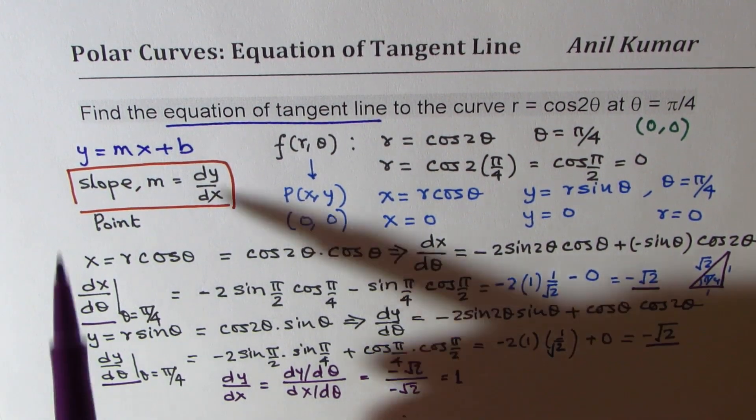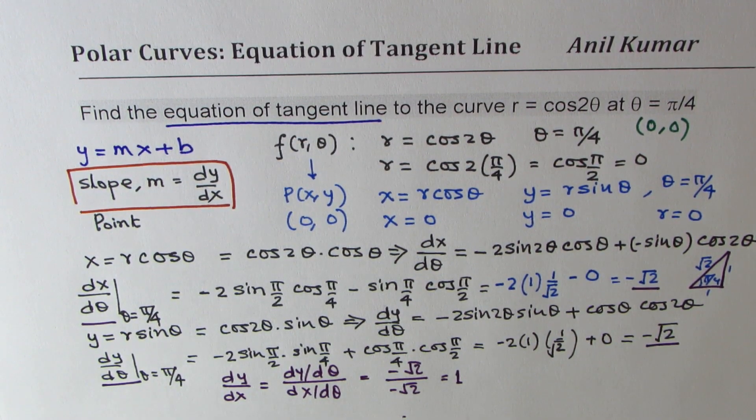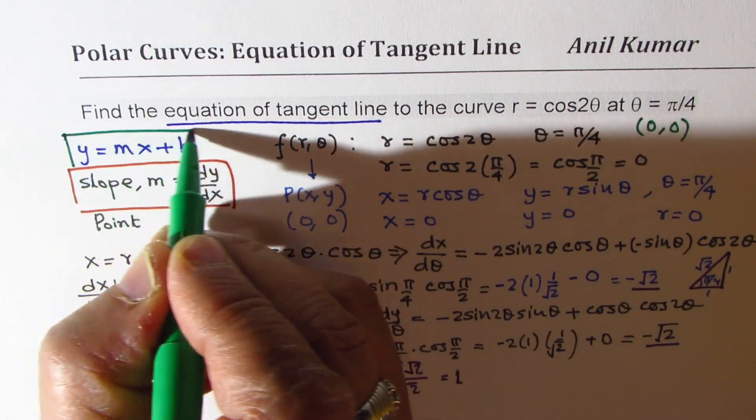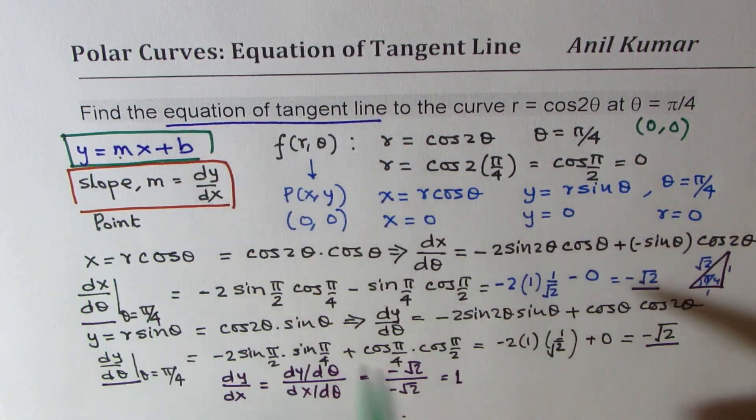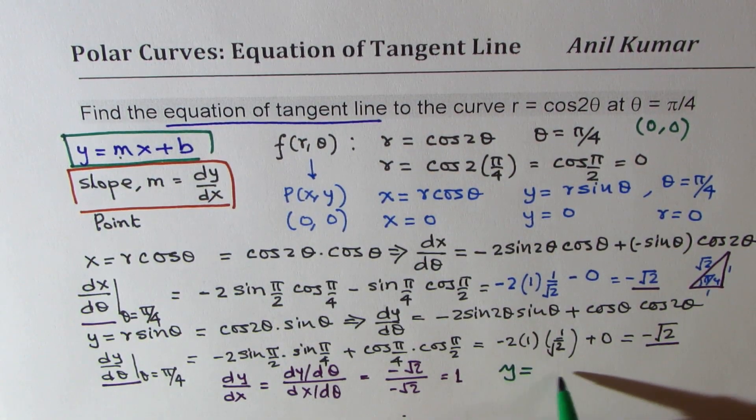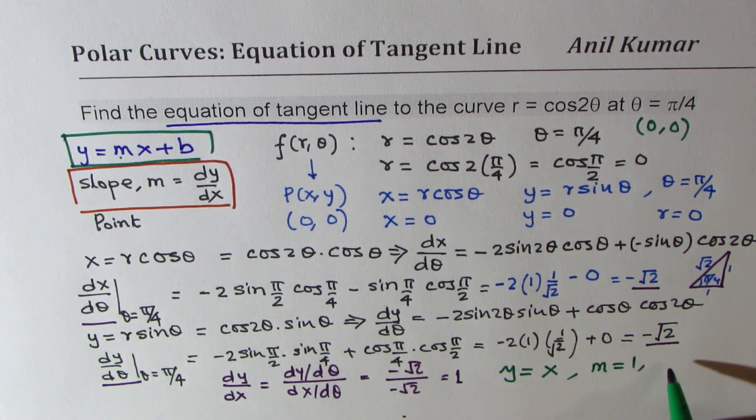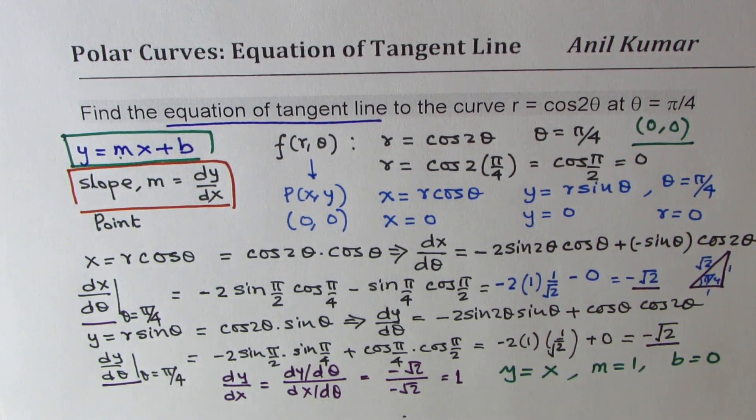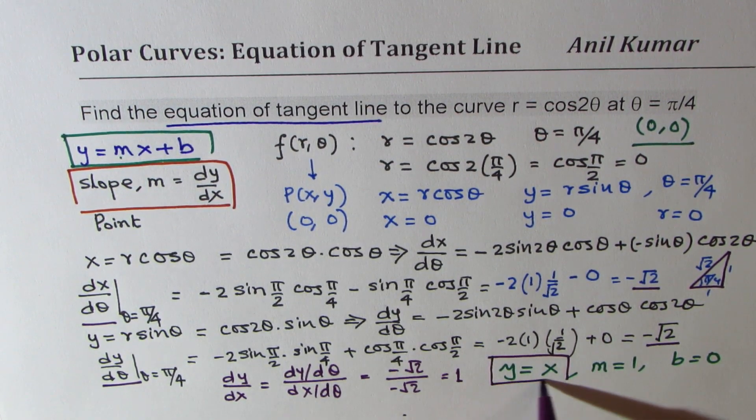So now in our equation of the line y equals mx plus b, we get m as 1. So the equation becomes y equals x. Since m equals 1 and b equals 0, because the point is the origin. So y equals x is the equation of tangent line for the given condition.